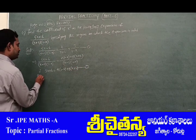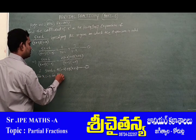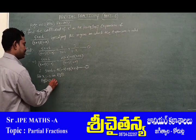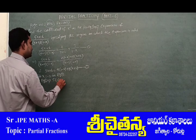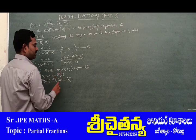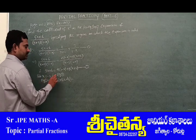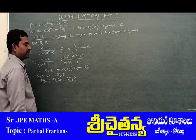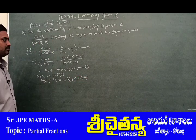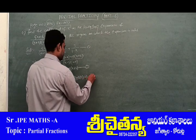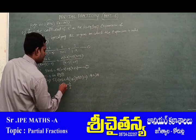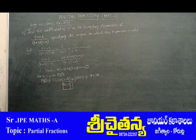Substitute x = -2 in equation number 2. Then: 5(-2) + 6 = A(1-(-2)) + B(0), which gives -10 + 6 = -4 = 3A. Therefore, A = -4/3.